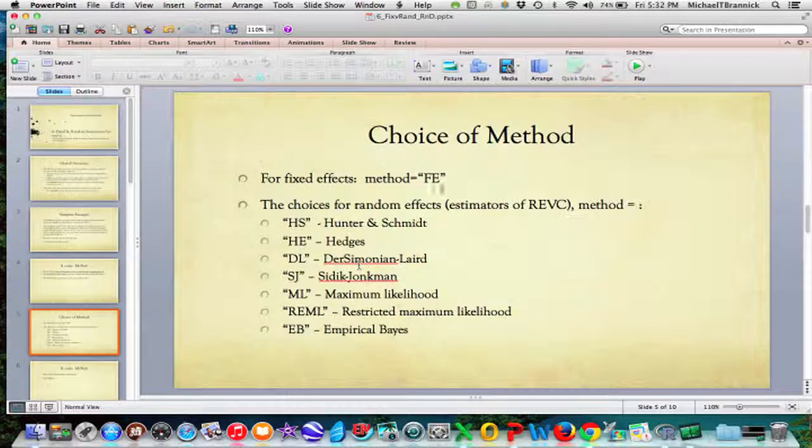Then if you want a fixed effects, you say just FE where it's method. So I put nothing in that last one, but you can put method and then something. One of the things is FE for fixed. If you want random, then you say method equals, and then you choose one of these. So HS is Hunter and Schmidt. HE is Hedges.